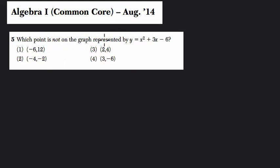Okay, they ask us which point is not on the graph represented by y equals x squared plus 3x minus 6. So these four points, if they are on this curve, this parabola, if they are a solution to this equation, then they are on it.